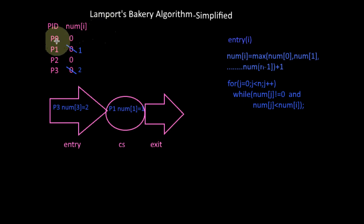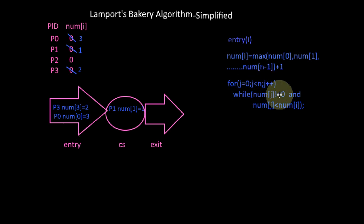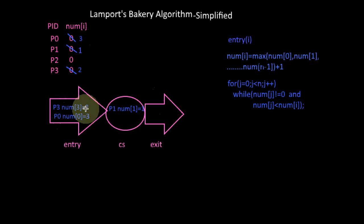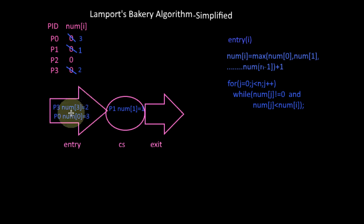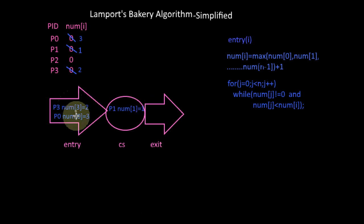Now let one more process arise — P0 wishes to enter the critical section. It will calculate its number: the maximum of all numbers is two, plus one is three. So the token number for P0 is three. In condition checking, there are two processes P1 and P3 whose numbers are not equal to zero and are lower than token number three. Hence P0 should wait for both P3 and P1. We can see it works on a first-come-first-served basis: P1 executes first, followed by P3, followed by P0.